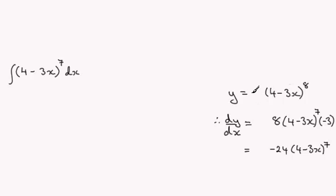And that tells me that if I was to multiply this by -1/24, then that constant would be -1/24 here and -1/24 there. And so when I do -1/24 multiplied with the -24 there, I'm just going to get 1, one lot of (4 - 3x)^7.